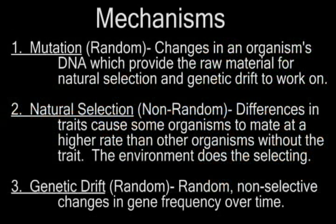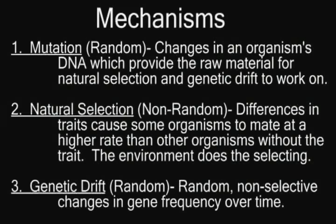The main mechanisms driving evolution are mutations, natural selection, and genetic drift. Random mutations provide the raw information necessary for the other mechanisms to work upon. Natural selection is, by definition, a non-random process whereby the environment favors one trait leading to its accumulation in the population.